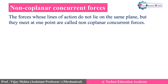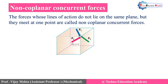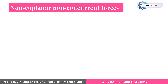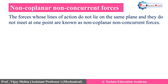The next type is non-co-planar concurrent forces. The forces whose line of action do not lie on the same plane but they meet at one point are called non-co-planar concurrent forces. Here we are considering three forces P1, P2, and P3 — they meet at one point, so it is concurrent, but their line of action is in different planes, not on the same plane, so it is non-co-planar. Thus forces P1, P2, and P3 here are non-co-planar concurrent forces.